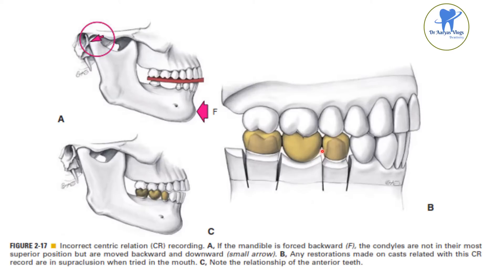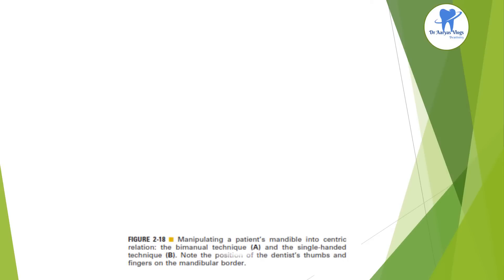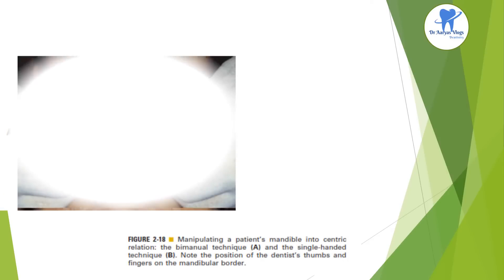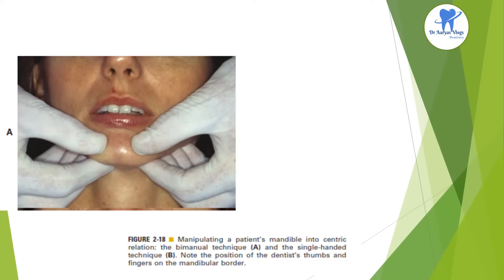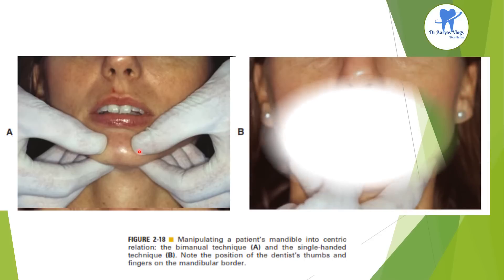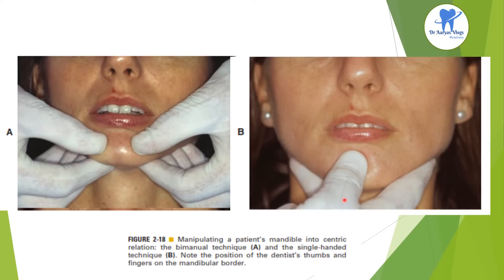In this relation, the restorations made on the cast related to this record are in supra-occlusion when tried in the mouth. This is the picture showing manipulation of the patient's mandible into centric relation — this is the bimanual technique, and this is the single-handed technique. Note the position of the dentist's thumb and fingers on the mandibular border.